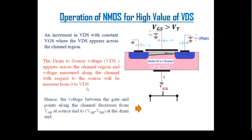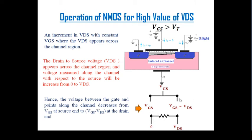For better understanding, think of the gate-to-source voltage at one side and a resistive channel connected from source (0V) to drain (VDS). The voltage difference from gate to source end is VGS, and from gate to drain end is VGS minus VDS. So the voltage between the gate and points along the channel decreases from VGS at the source end to VGS minus VDS at the drain end.